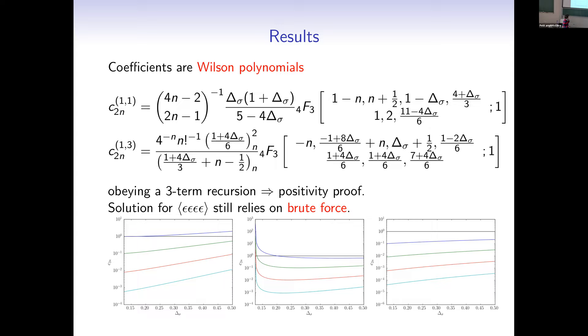The coefficients are positive for central charge one-half and above — so everything from the first minimal model (Ising) to the last and everything in between. Moving on to the four-epsilon correlator, the Kac indices are (1,3), so the differential equation is third order and we have to use the Frobenius method. A question is raised about why to use differential equations instead of Zamolodchikov's recursion relation — this might just be a choice; the recursion relation has poles but the residues are zero, so we're still allowed to use it.